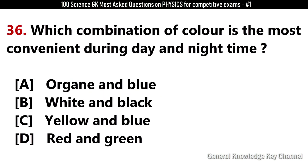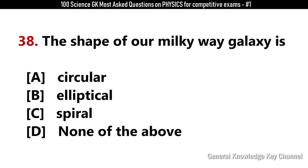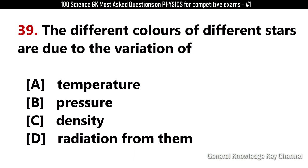Which combination of colors is most convenient during day and night time? Answer D: Red and green. The instrument that measures and records the relative humidity of air is? Answer B: Hygrometer. The shape of our Milky Way galaxy is? Answer C: Spiral. The different colors of different stars are due to the variation of? Answer A: Temperature.